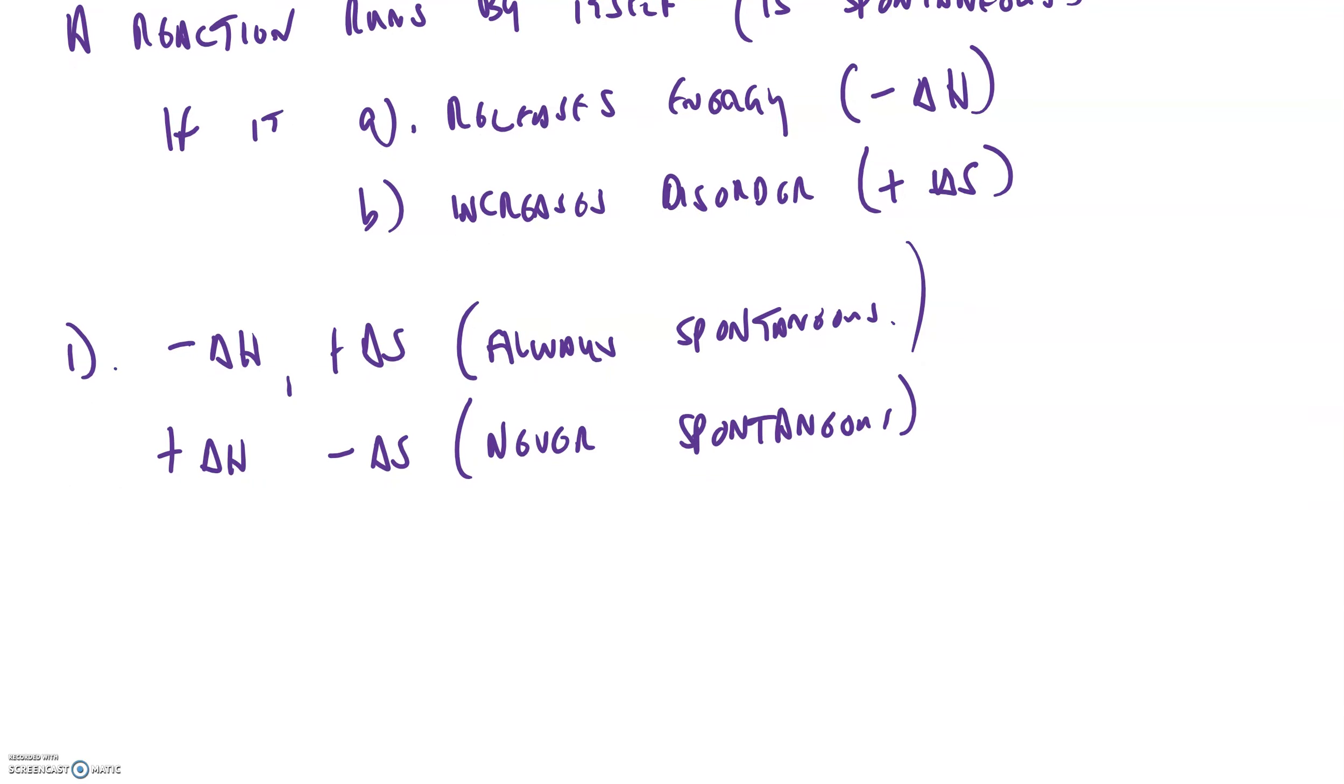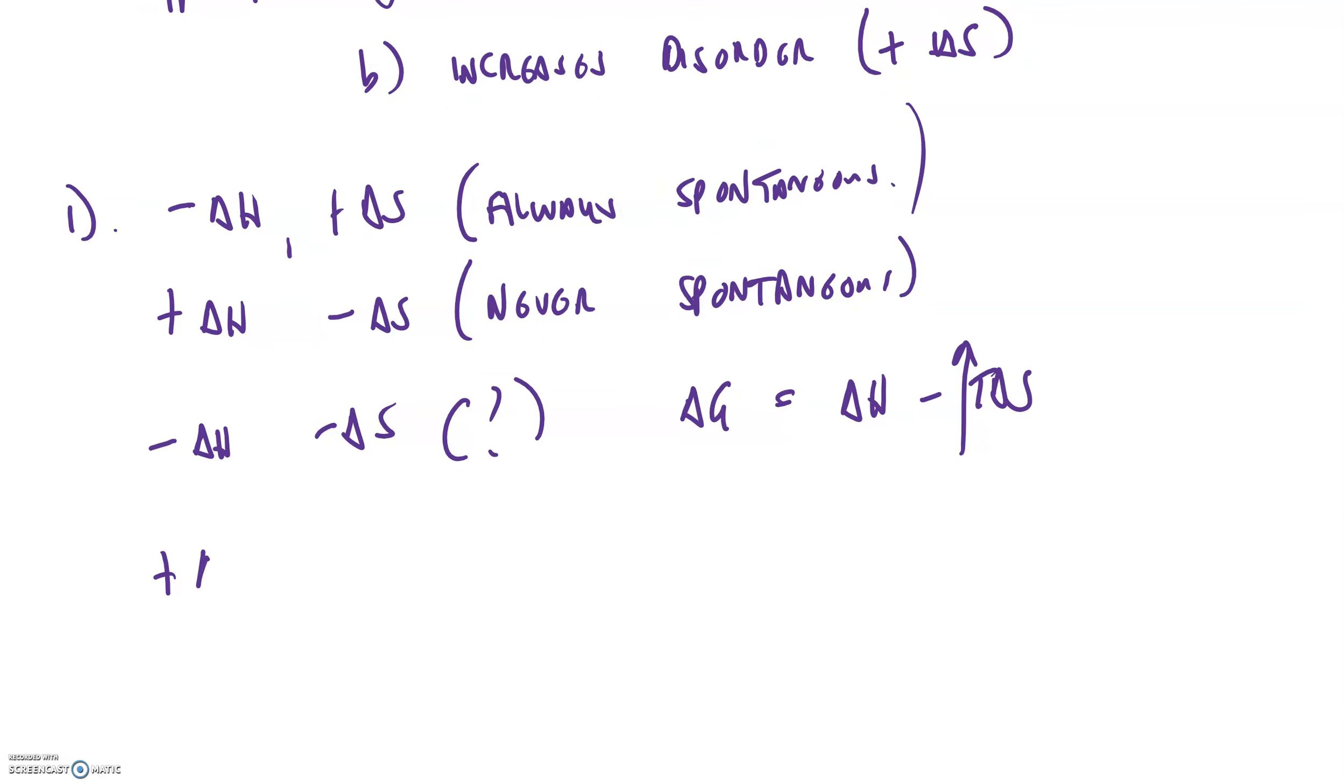And then we have situations where we have a negative delta H. It gives off energy but it has a negative delta S. That depends. That's what our equation for Gibbs free energy is for. We would have to use delta G equals delta H minus T delta S to find this out. You could probably guess that a reaction like this would be spontaneous as long as the temperature was increasing. And vice versa, a reaction that requires influx of energy but also increases delta S. Again, we'd have to use delta G equals delta H minus T delta S to figure this one out.